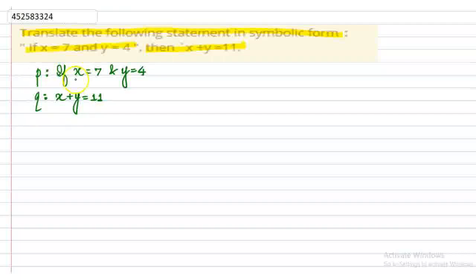So what is this? If x equals 7 and y equals 4, then x plus y equals 11. So what is this symbolic representation?